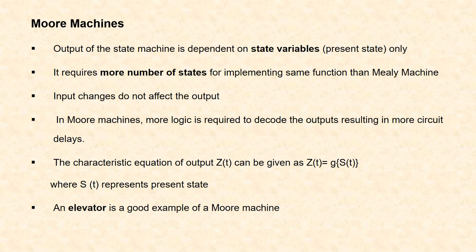Next, Moore machines. In a Moore machine, the output depends only on the state variables, that is the present state. It requires more number of states than a Mealy machine for implementing the same function. Input changes do not affect the output because the output depends only on the state variables. Also, in Moore machines, more logic is required to decode the outputs, resulting in more circuit delays. The characteristic equation of a Moore machine is given by output Z(t) = G(S(t)), where G represents the function and S(t) represents the present state. An example for a Moore machine is an elevator — each floor is a different state, and pressing a button changes the state to the new level without any additional input.